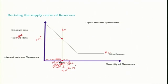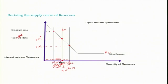Given this open market operation, the Fed Fund rate will be determined at this intersection point. What if they increase the open market purchase — the Federal Reserve System injects more reserve into the banking system? Then this is going to be the new equilibrium point and the Fed Fund rate decreases. Similarly, what if instead of open market purchase they do open market sale and take back reserve from the banking system? Then the Fed Fund rate is going to increase to FFR2.